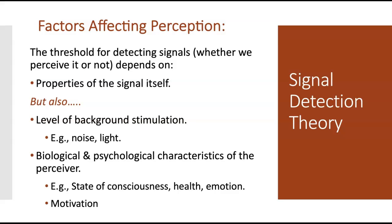The biological and psychological characteristics of the perceiver also matter. State of consciousness is one example: when you're feeling tired and your level of awareness is much lower, you are less alert and much less likely to perceive things. Health is another: when you have a cold, you're much less able to pick up different smells. Your emotion and mood also affect what information you attend to — when we're in a good mood, things that might normally irritate us are less likely to, and we may perceive things more positively. When we're in a bad mood, we're more likely to perceive things negatively.